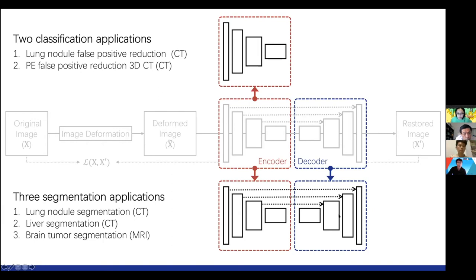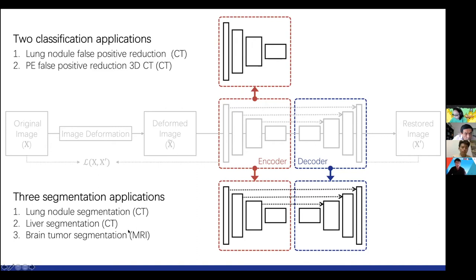In our paper, we use five real application use cases: two classification tasks — lung nodule false positive reduction (is this a lung nodule or false positive?) and pulmonary embolism false positive reduction — and three segmentation applications: segment lung nodule from CT, segment liver, and segment brain tumor from MRI. So the target tasks span both MRI and CT modalities.